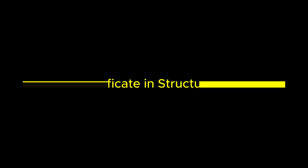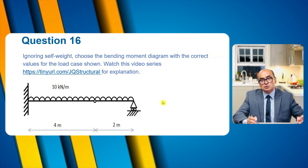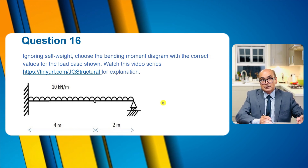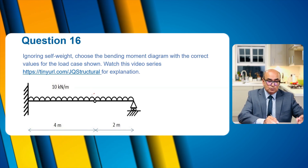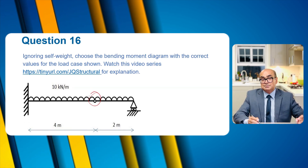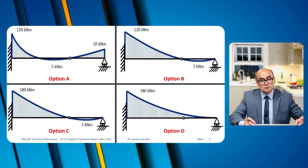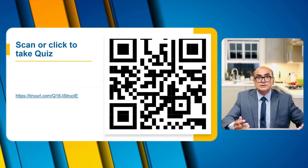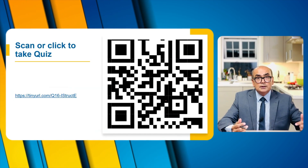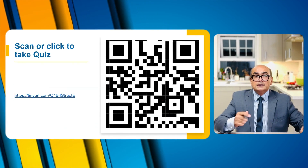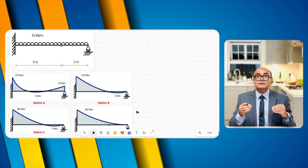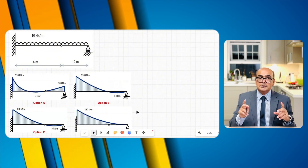This is part 16 of my lecture series on the iStructE certificate course in structural behavior. In this example we have to draw the bending moment diagram for this propped cantilever. The key thing to note here is that we have an internal pin. There are four options to choose from. If you want to try this question first, go to this link or scan this barcode to try the quiz first.